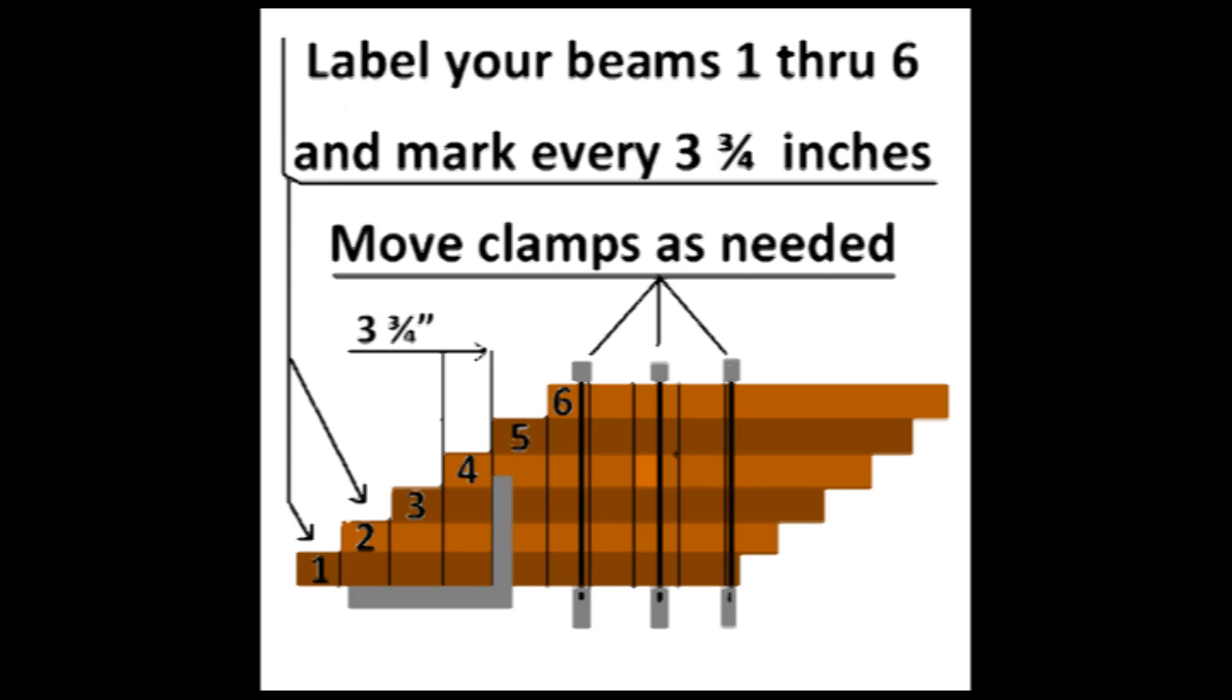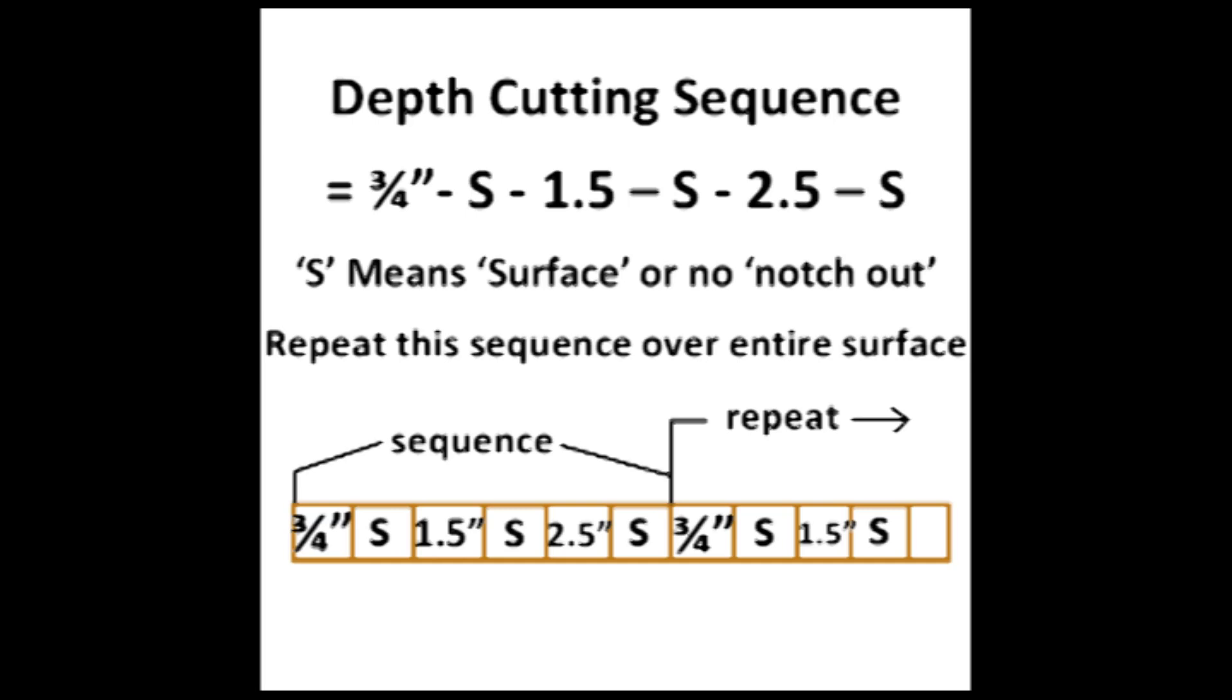Set your saw to a depth of 3 quarters of an inch and cut your first two lines. Following the pattern of the diagram, skip a cut. The S stands for surface, since that will be the high part of the end product. Your next cut will be to a depth of 1.5 inches, and again skip the next row. Your final saw depth will be set at 2.5 inches. Skip a row and start over at zero.